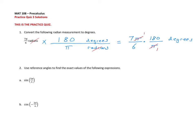6 goes into itself once, and it goes into 180 a total of 30 times. So the denominators are gone — it's just 7 times 30. So 7 is being multiplied to 30, and what is left over is degrees. That's 210 degrees, and that is the final answer.